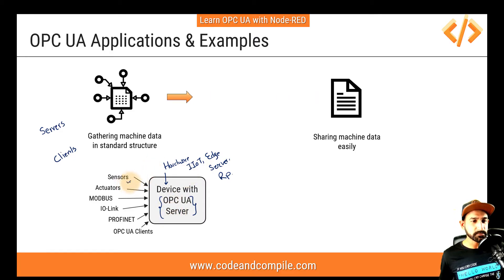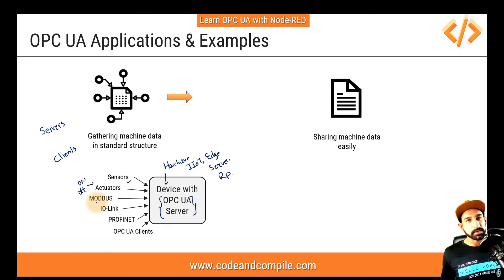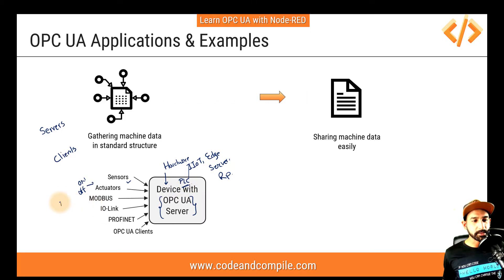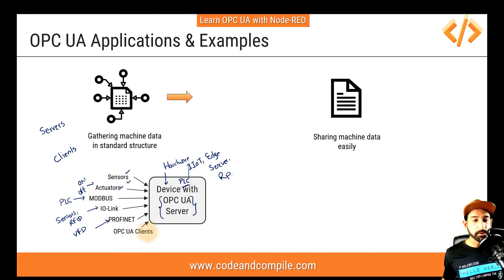Let's say this device is a PLC. It is reading data from another PLC via Modbus, has actuators and sensors connected, is reading sensor values via IO-Link, has an RFID connection, and has a Profinet connection to perhaps a VFD or a servo drive. So this PLC has many connections and is gathering data from all of them. It can also be connected to an OPC UA client — the server is connected to so many devices and collecting that data.